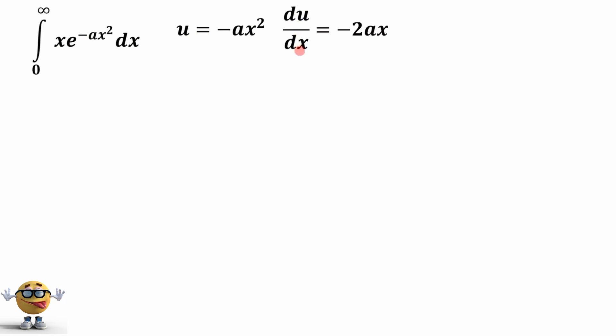So we'll take the derivative of u with respect to x. That's negative 2ax. Now we're going to rearrange this so that we have x dx on one side, because there's x dx down here. And then the rest of it's going to be du over negative 2a.